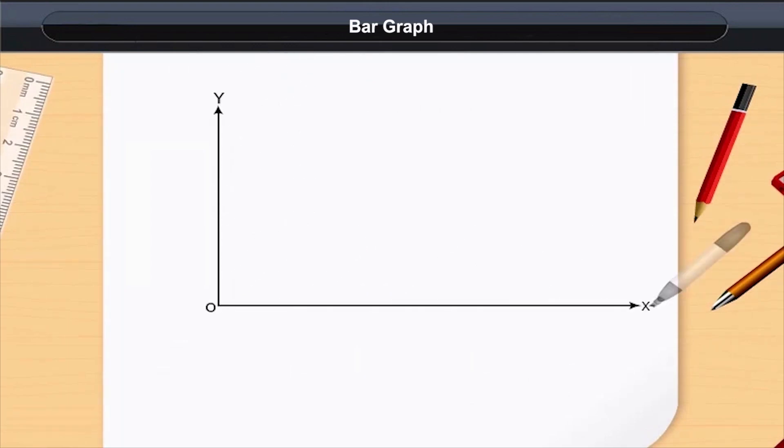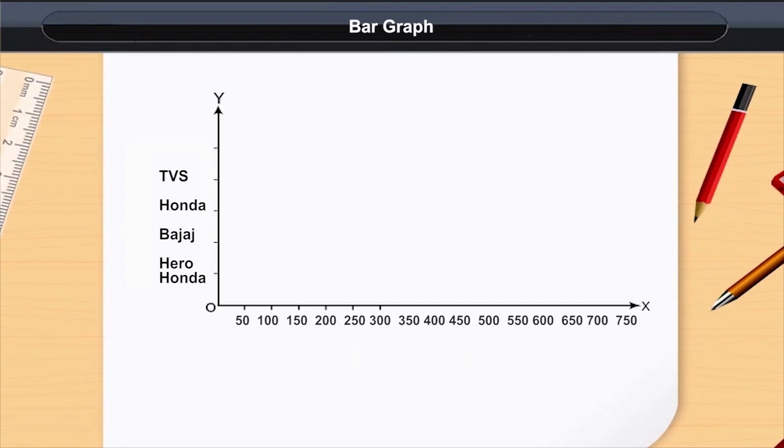Similarly, we draw a bar for Bajaj, Honda, and TVS. This completes the vertical bar graph.